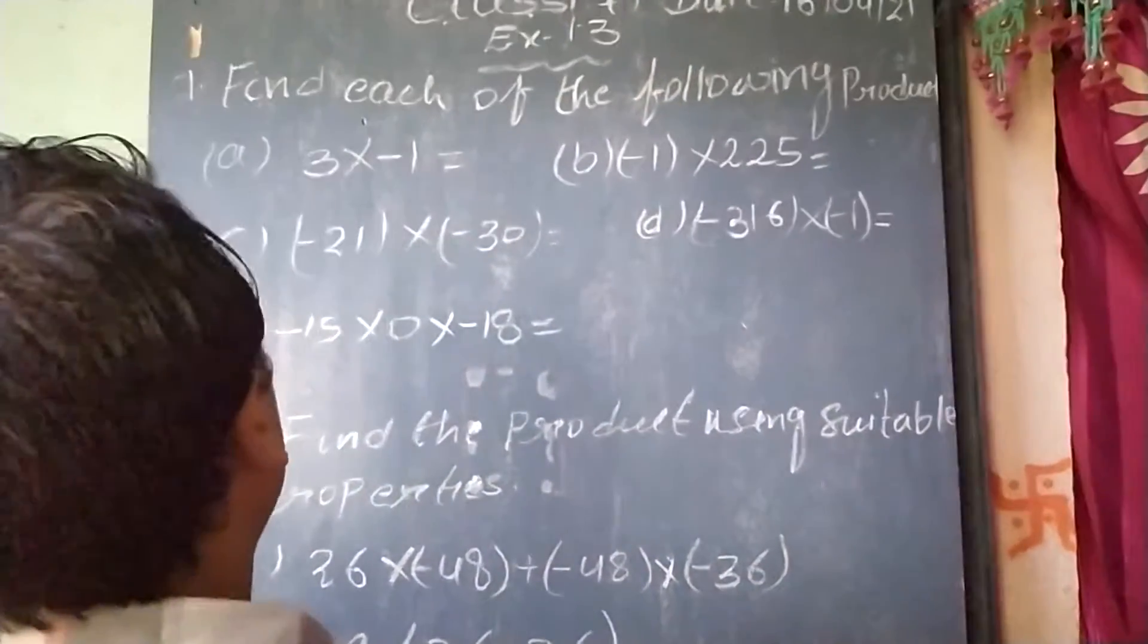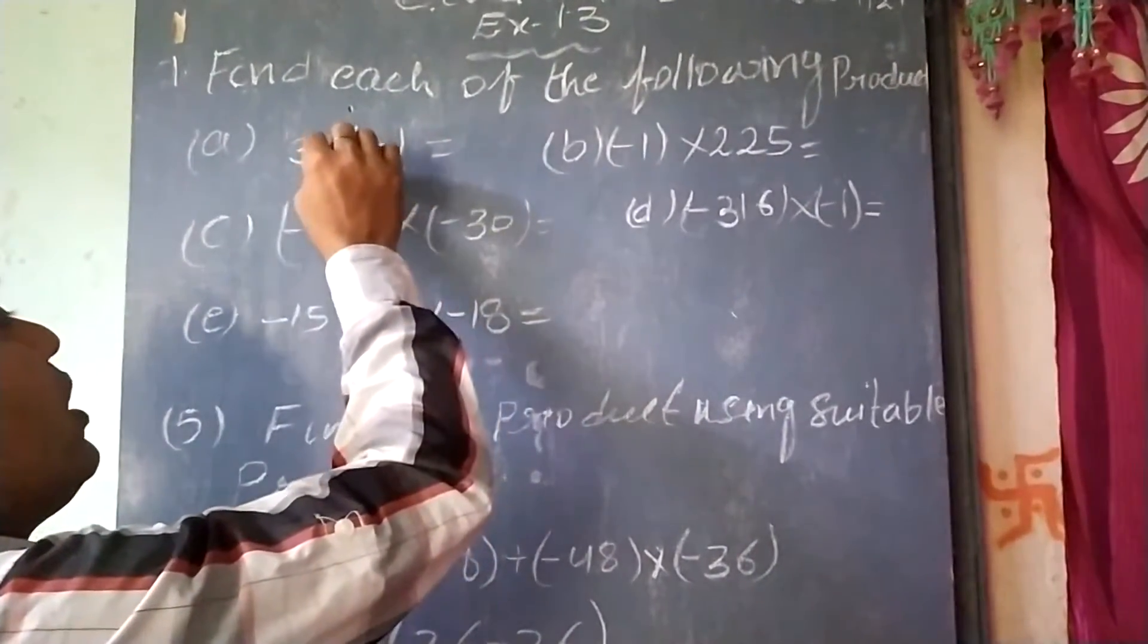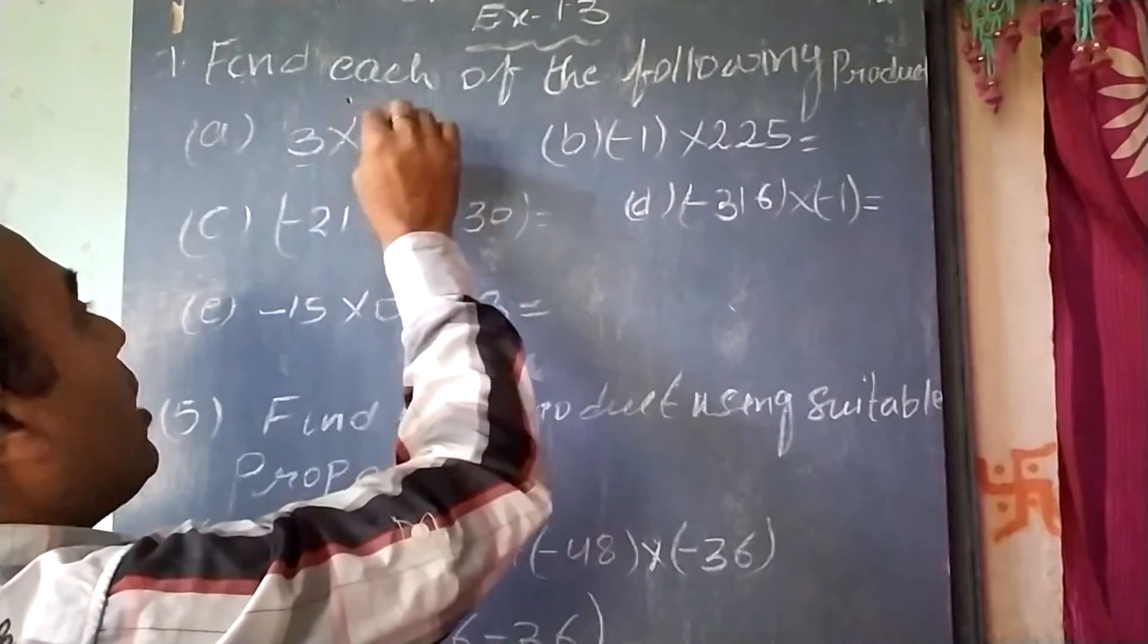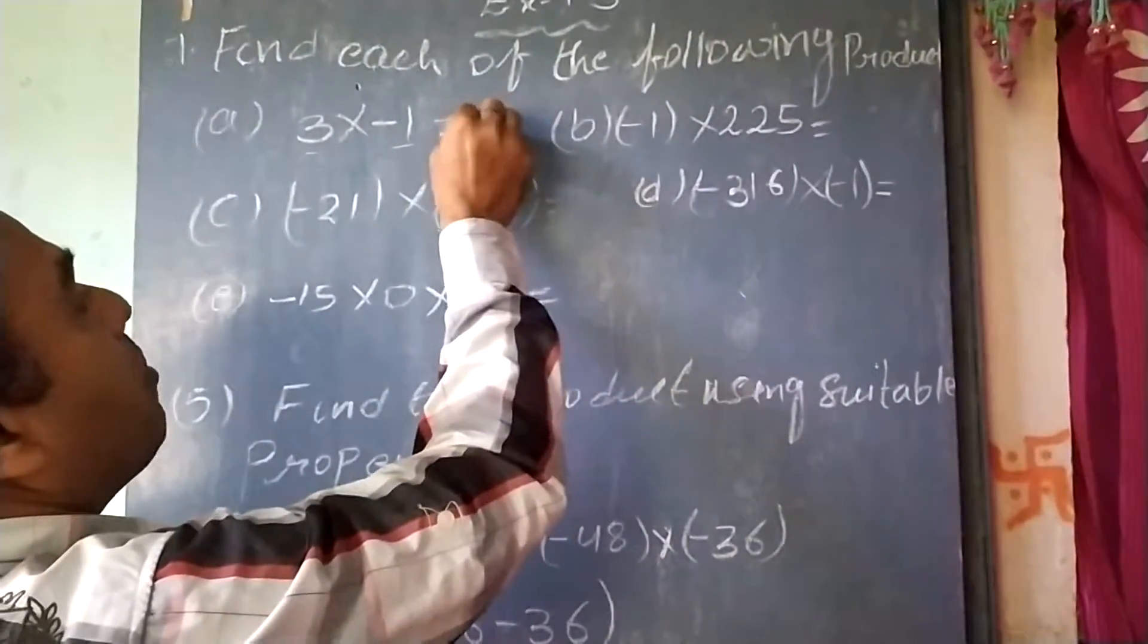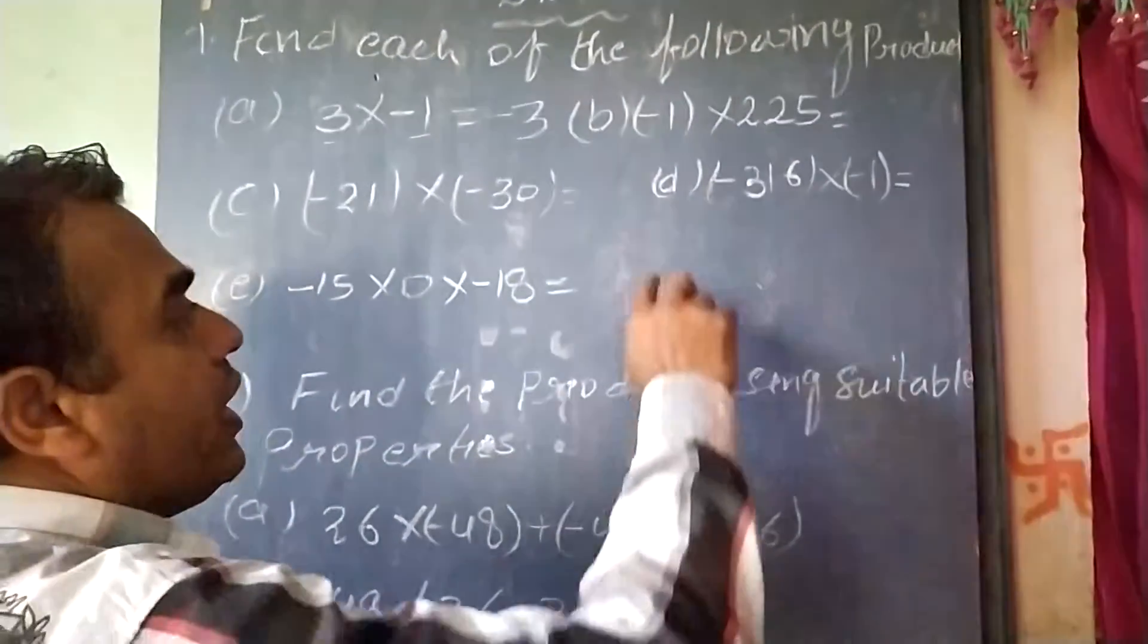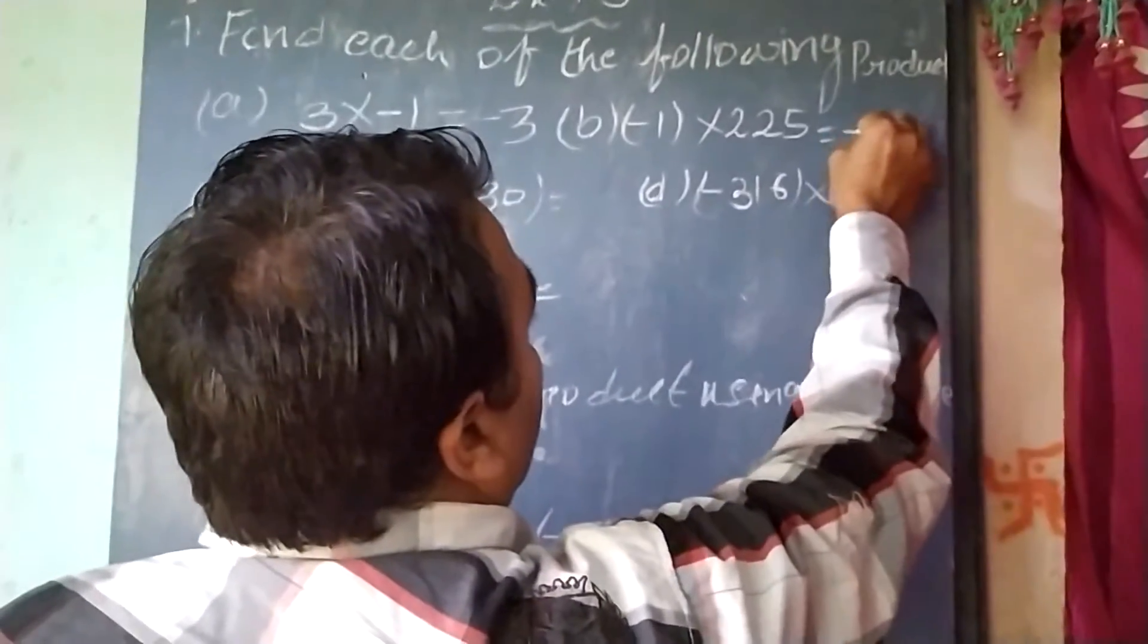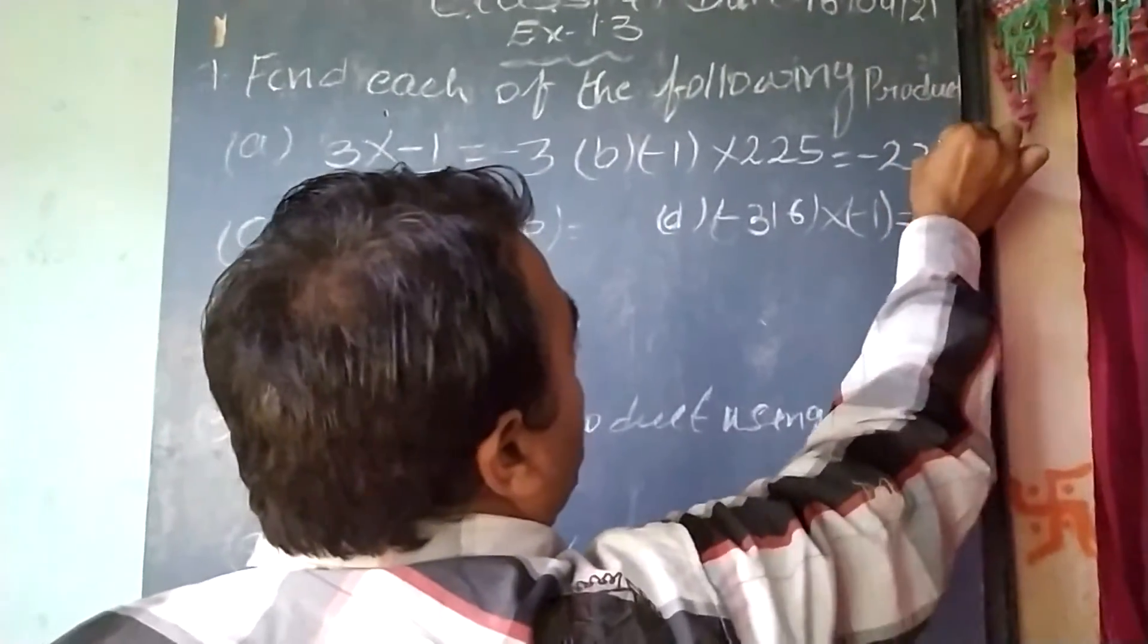What will be the product of 3 times minus 1? As it is a negative number and a positive, the multiplication of negative and positive will be a negative number, that is minus 3. Similarly, minus 1 multiplied by 225 will also be negative 225.